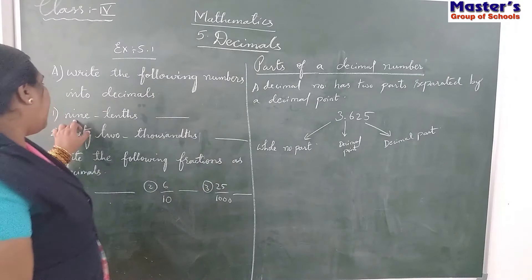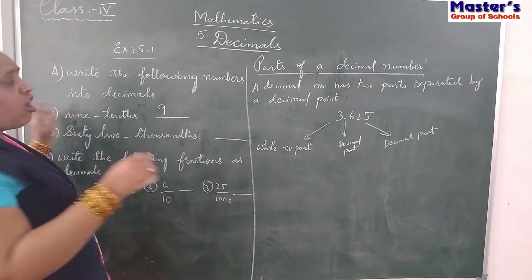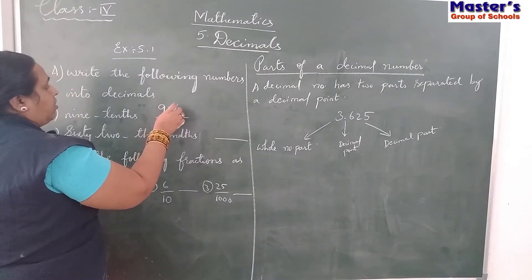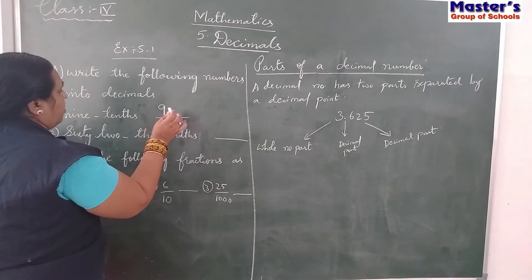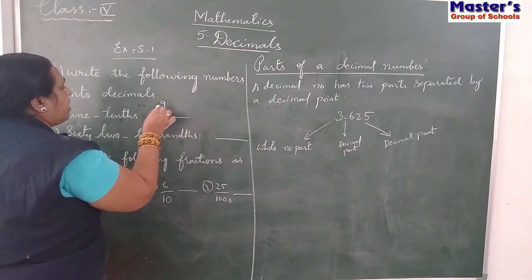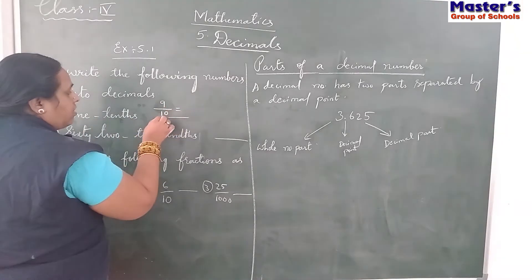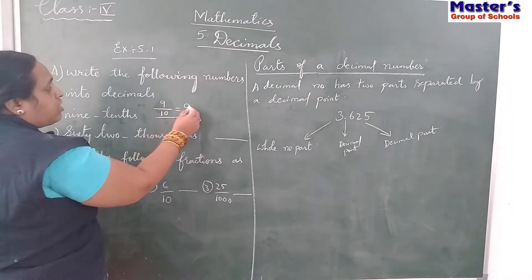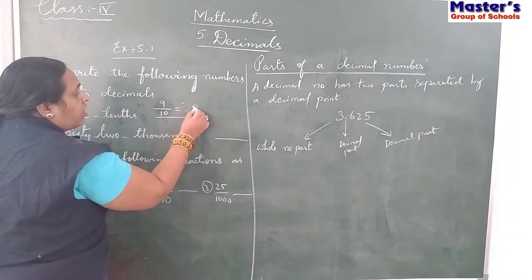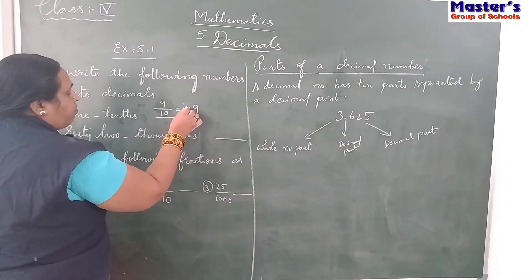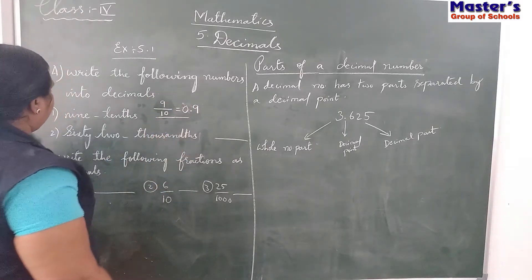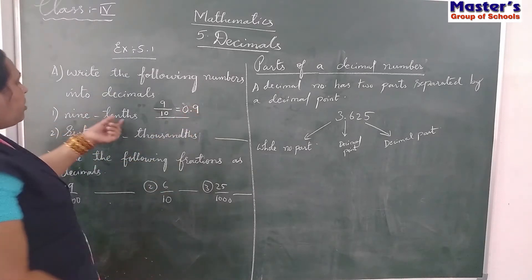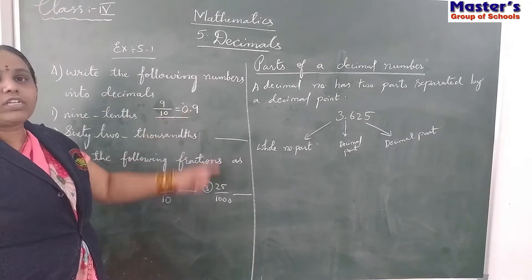See, 9/10th - 10th means after the decimal point. See here, 9/10th. This is nothing but 9 over 10. 10th means you have to write in decimal form. You are having 1 and 0. So after the number, from the decimal point, 9/10th means divided by 10. So if you remove the zero, it will be 0.9.